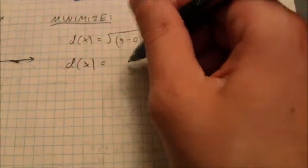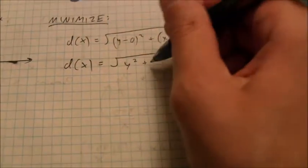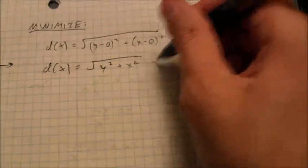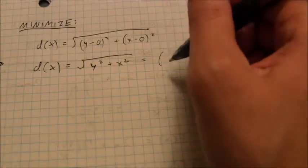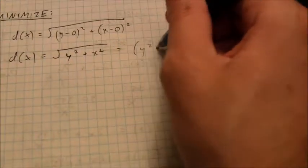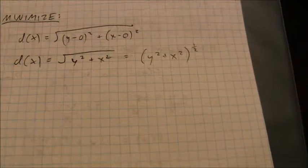And I can do a little simplifying here. d of x is equal to the square root of y squared plus x squared. I may want to write that as this value taken to the one-half power. It would be easier to take a derivative of.